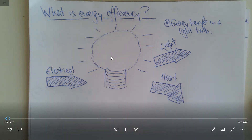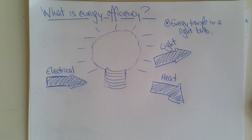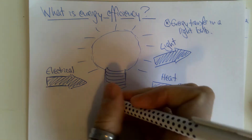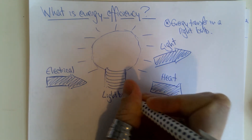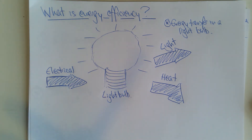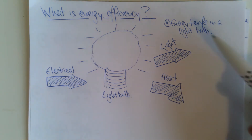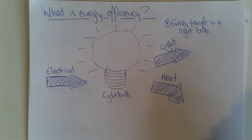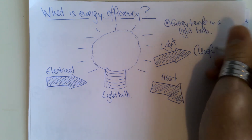Welcome to this recap video on the efficiency of energy transfers. On screen we have a light bulb diagram showing the energy transfer: electrical energy goes into the light bulb and out comes two forms of energy — light energy and heat energy. This is a good example to explore energy efficiency. The electrical energy going in is called the input energy, and the light and heat energy coming out are called output energy.